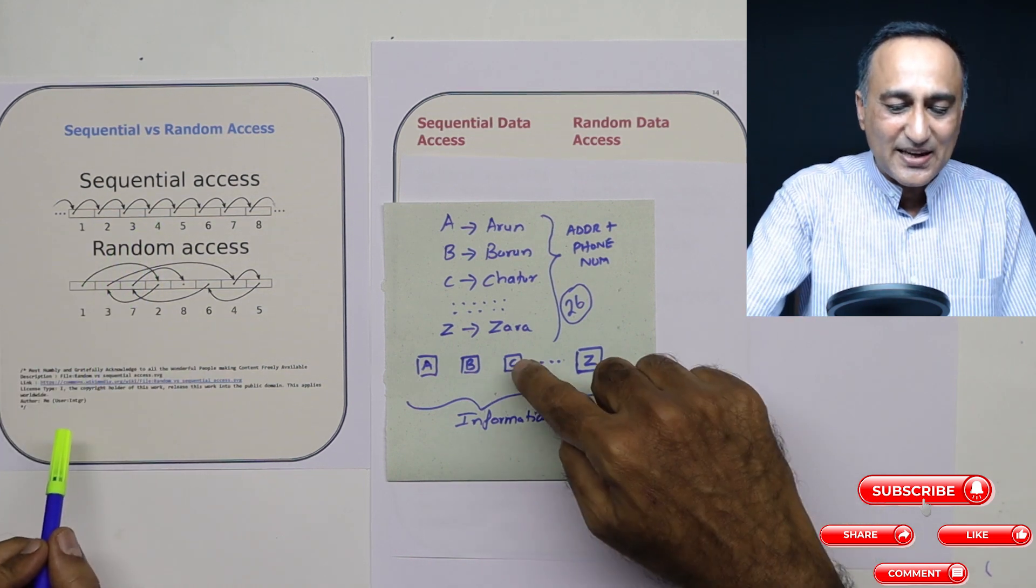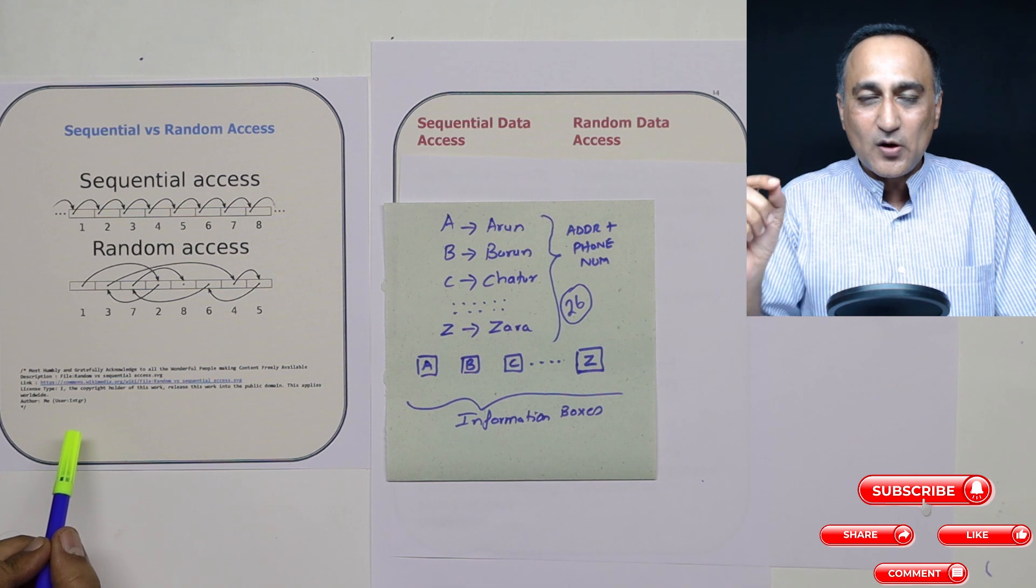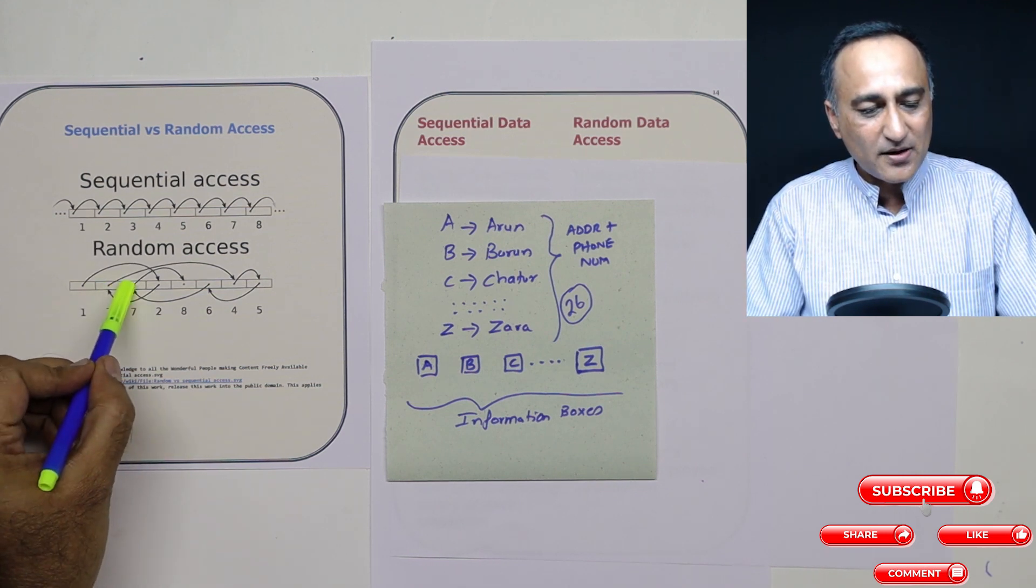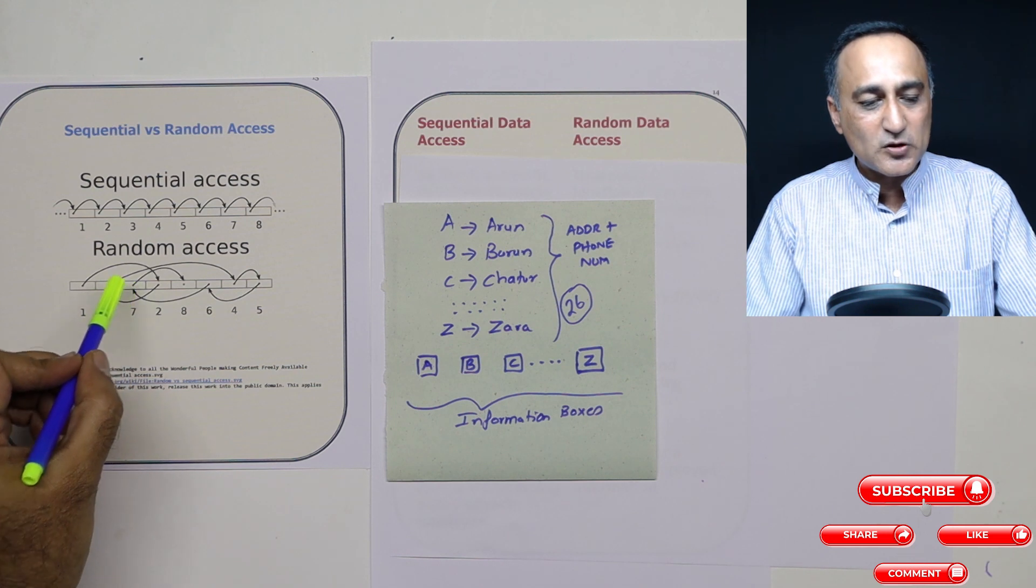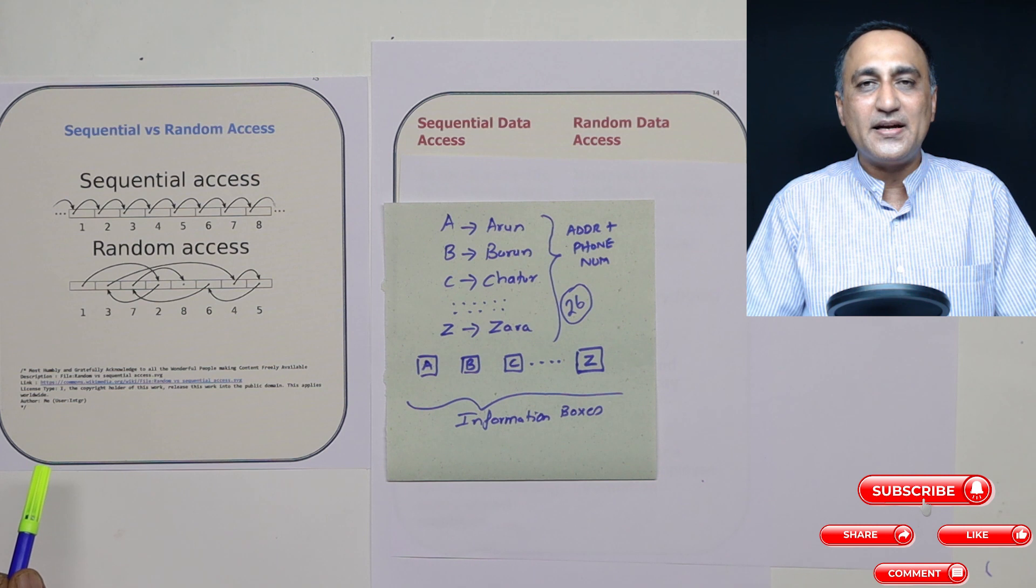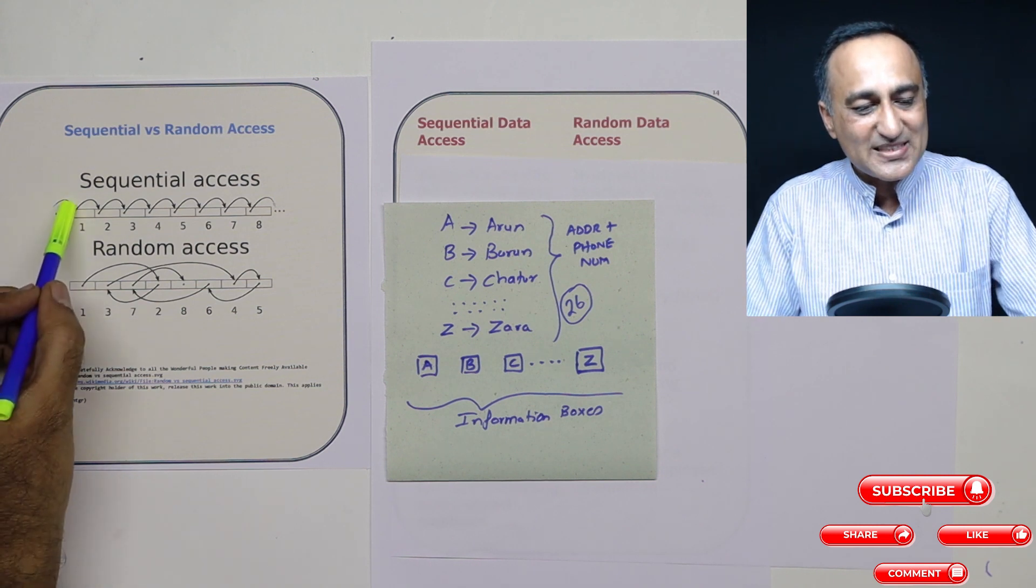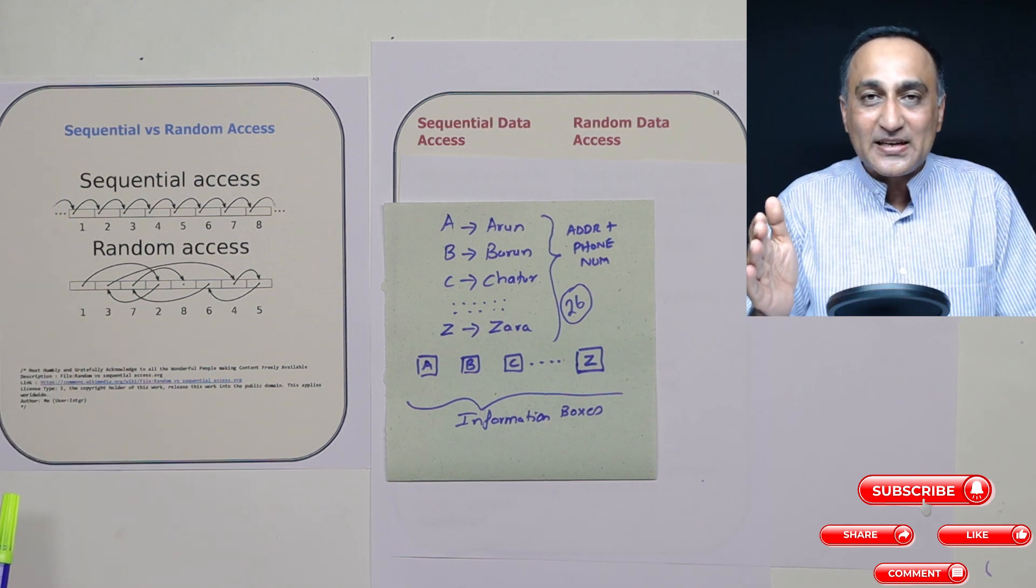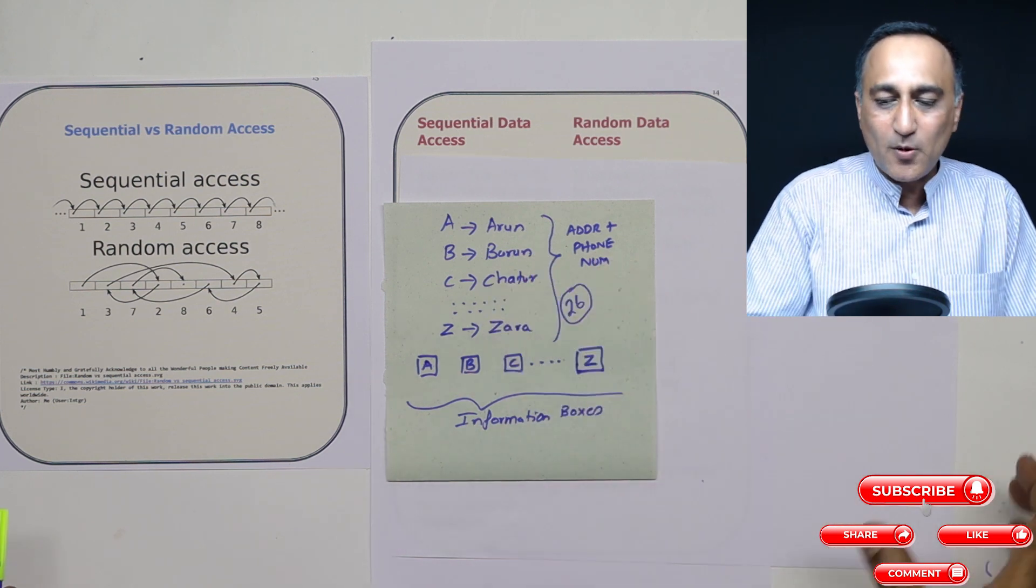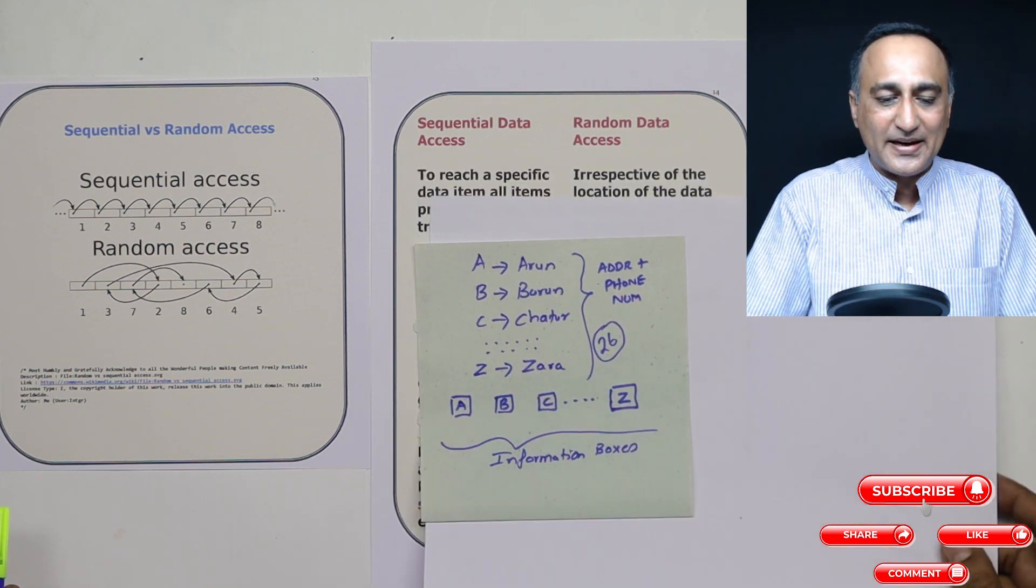Random access is something like this fellow, say I say go and get me data from three, it may end up going here and getting the data from three. So random access goes directly to the place where the data is stored, whereas sequential access has to visit all the data items which are stored before it. So this should give you an idea about sequential and random data access.